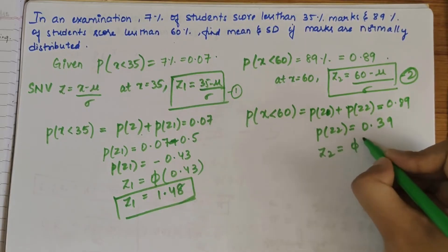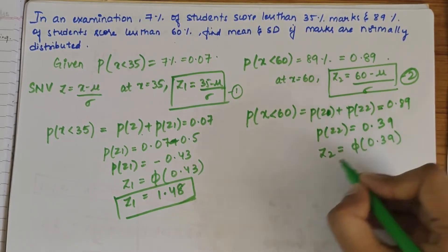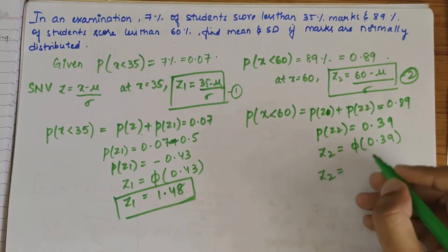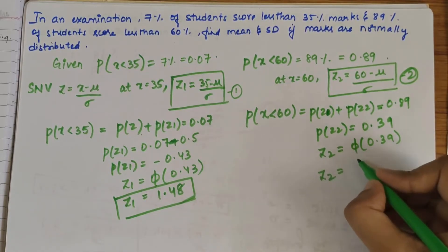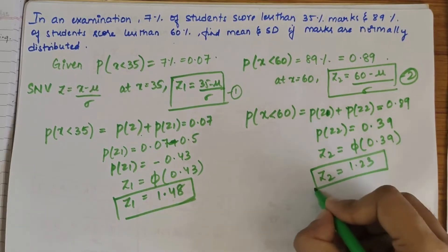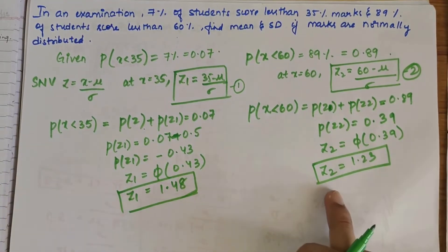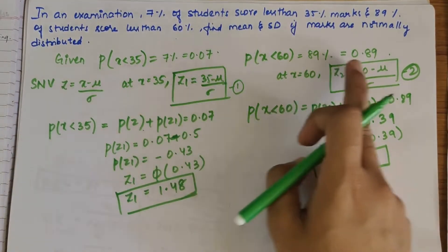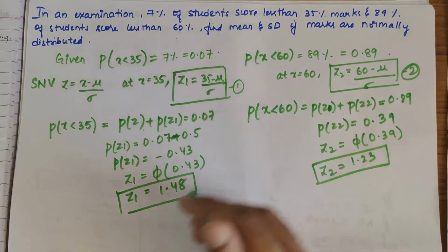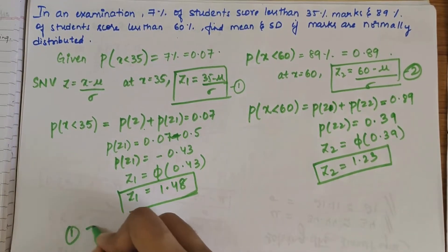Similarly for Z2: P(X less than 60) gives us 0.89. From the table you'll get Z2 value as 1.23.